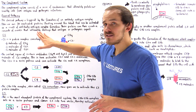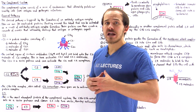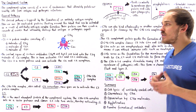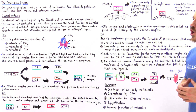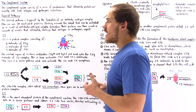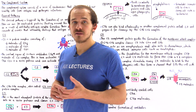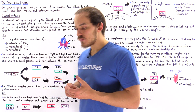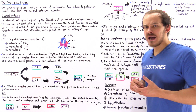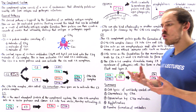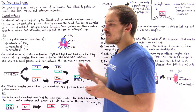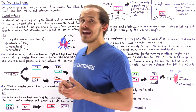We have the classical pathway that we're going to focus on in this lecture, and we have another pathway known as the alternative pathway which we're going to focus on in the next lecture. So, what exactly is the classical pathway? Well, let's recall the relationship between antibodies and antigens.